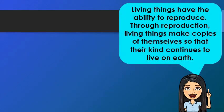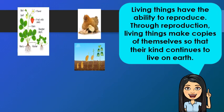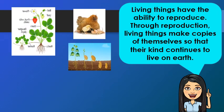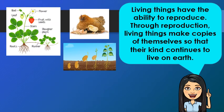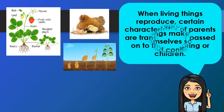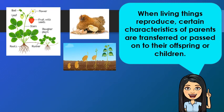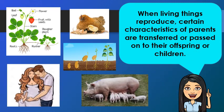Living things have the ability to reproduce. Through reproduction, living things make copies of themselves so that their kind continues to live on earth. Just like plants and animals, they produce their own kind. Human mothers give birth to their young ones, just like female dogs, cats, pigs, and dolphins. Other animals like birds, lizards, frogs, and fishes lay eggs. When living things reproduce, certain characteristics of parents are transferred or passed on to their offspring or children.